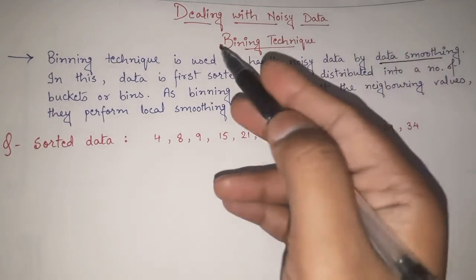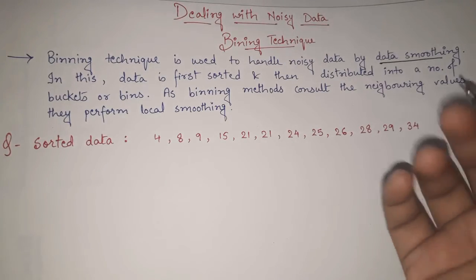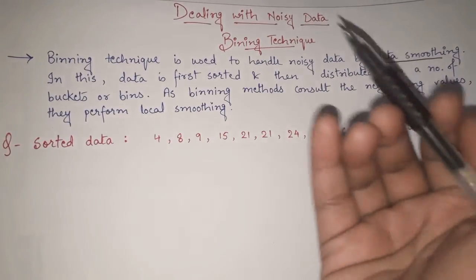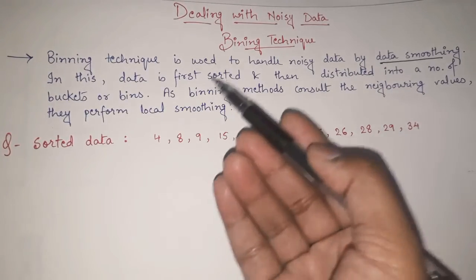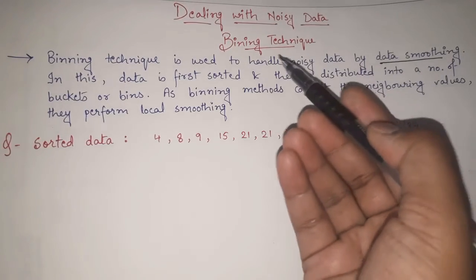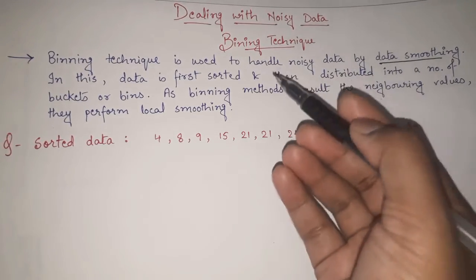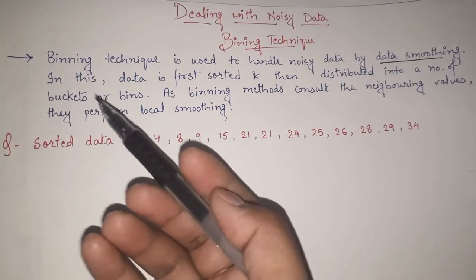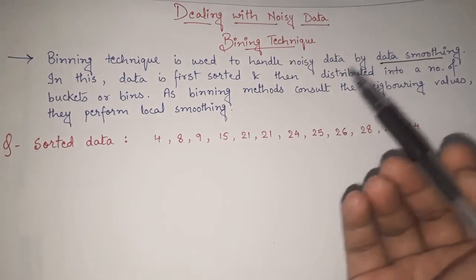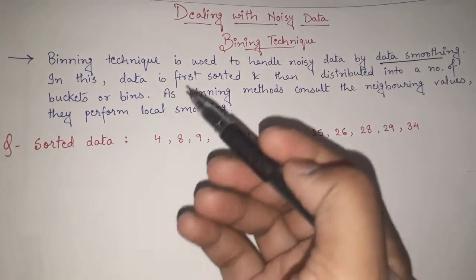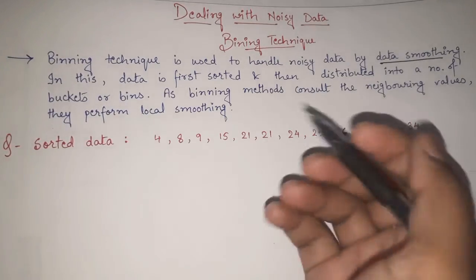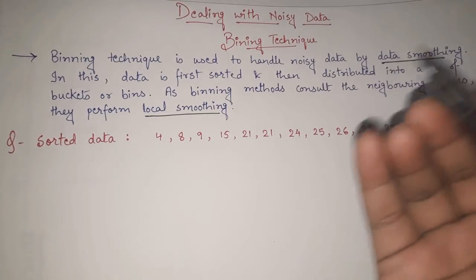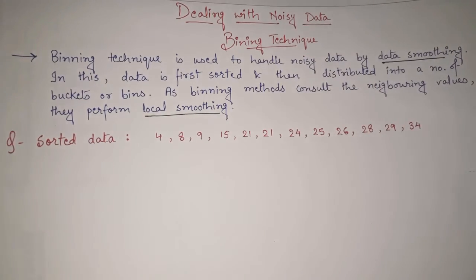One of the best techniques used for data smoothing is the binning technique. In this video we are going to see what the binning technique is, what are its types, and how to solve it with the help of an example. Binning technique is used to handle noisy data by data smoothing. The data is first sorted and then distributed into a number of bins or buckets. As the binning methods consult the neighboring values, they perform local smoothing.